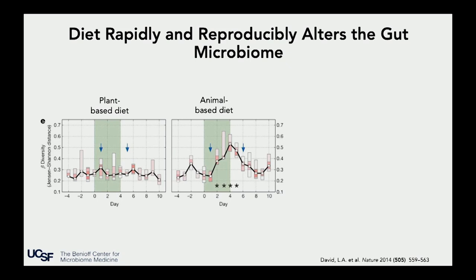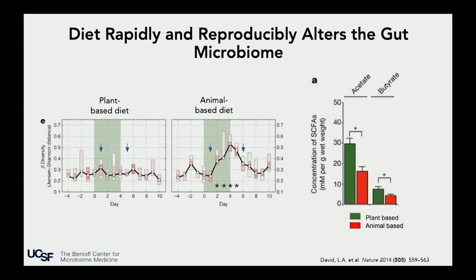What was really striking is that when Peter calculated the distance — how similar are the microbiomes of individuals after they start their plant-based diet compared to before — he didn't really see much in the way of change. A plant-based diet doesn't really perturb the gut microbiome. However, the animal-based diet introduction really increased this distance, telling us that the microbiome is very different from what was there before. But it's not just about changing the composition of the microbiome that matters. The study also showed that you change the molecular output of the microbiome by changing the diet. Two key short-chain fatty acids, acetate and butyrate, were significantly reduced in the animal-based diet versus the plant-based diet.